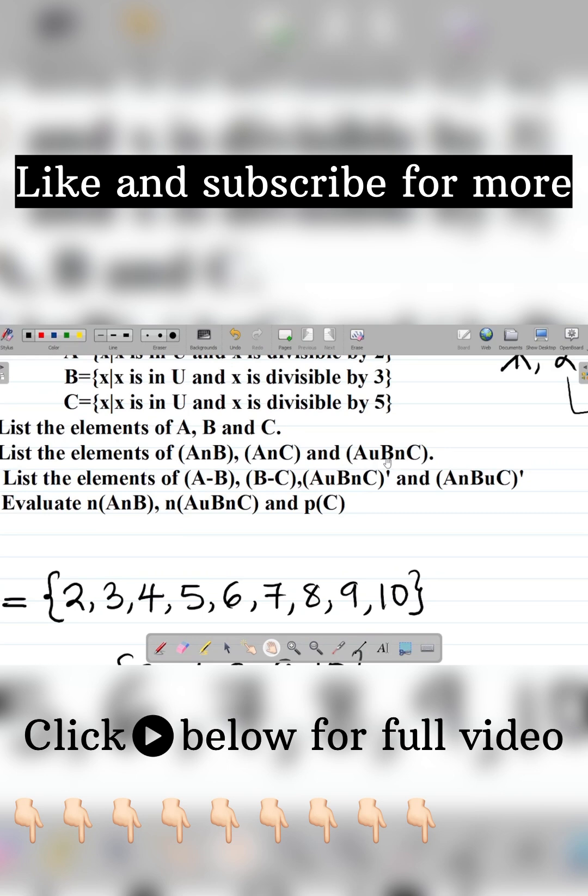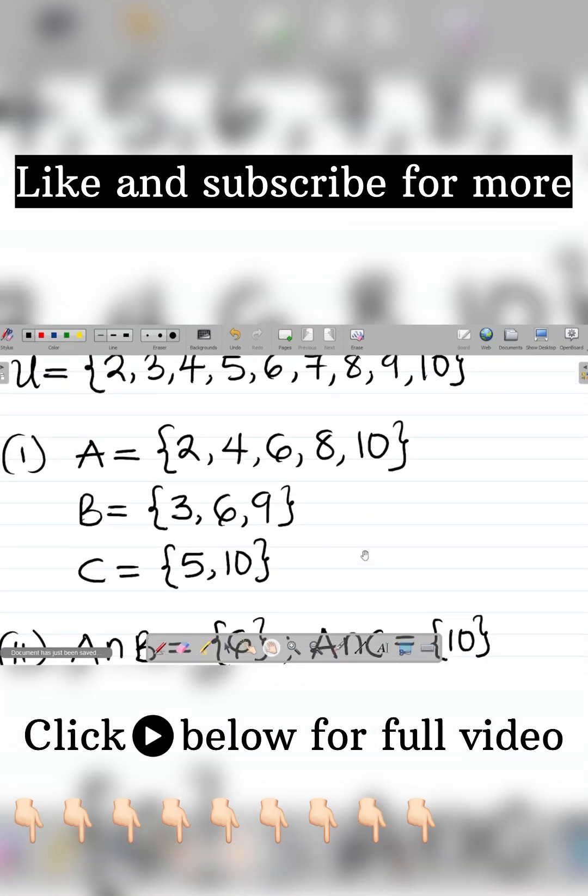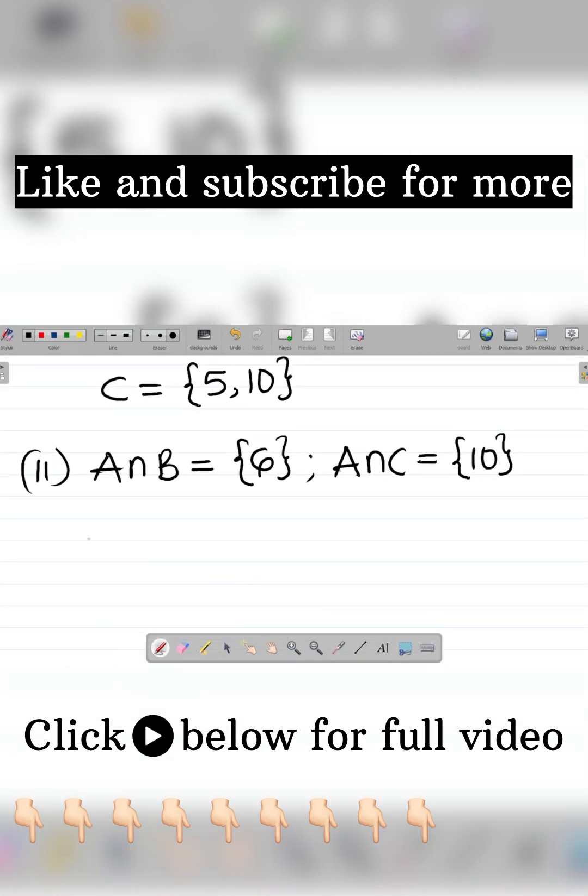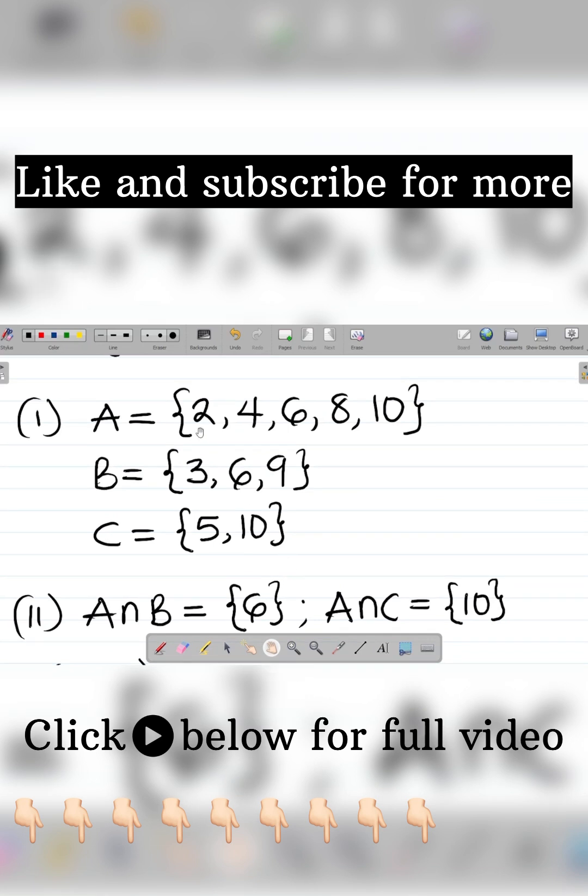All right, next one is A union B intersection C. What does that mean? Let's first of all get A union B. So A union B, let's get this first. A union B simply means I'm combining all the elements in A and B. That becomes two, three, four, six. You don't repeat.